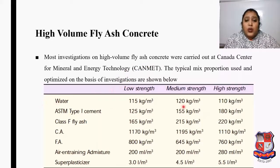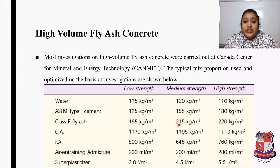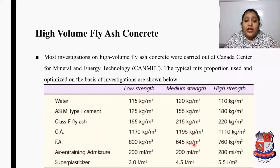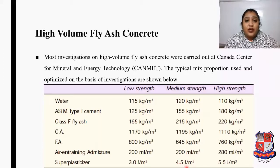For medium strength concrete, water is 120 kg/m³, ASTM Type 1 cement is 155 kg/m³, Class F fly ash is 215 kg/m³, coarse aggregate is 1195 kg/m³, fine aggregate is 645 kg/m³, air-entraining admixture is 200 ml/m³, and super plasticizer is 4.5 litres/m³. With water at 110 kg/m³, the resulting strength will be medium strength.